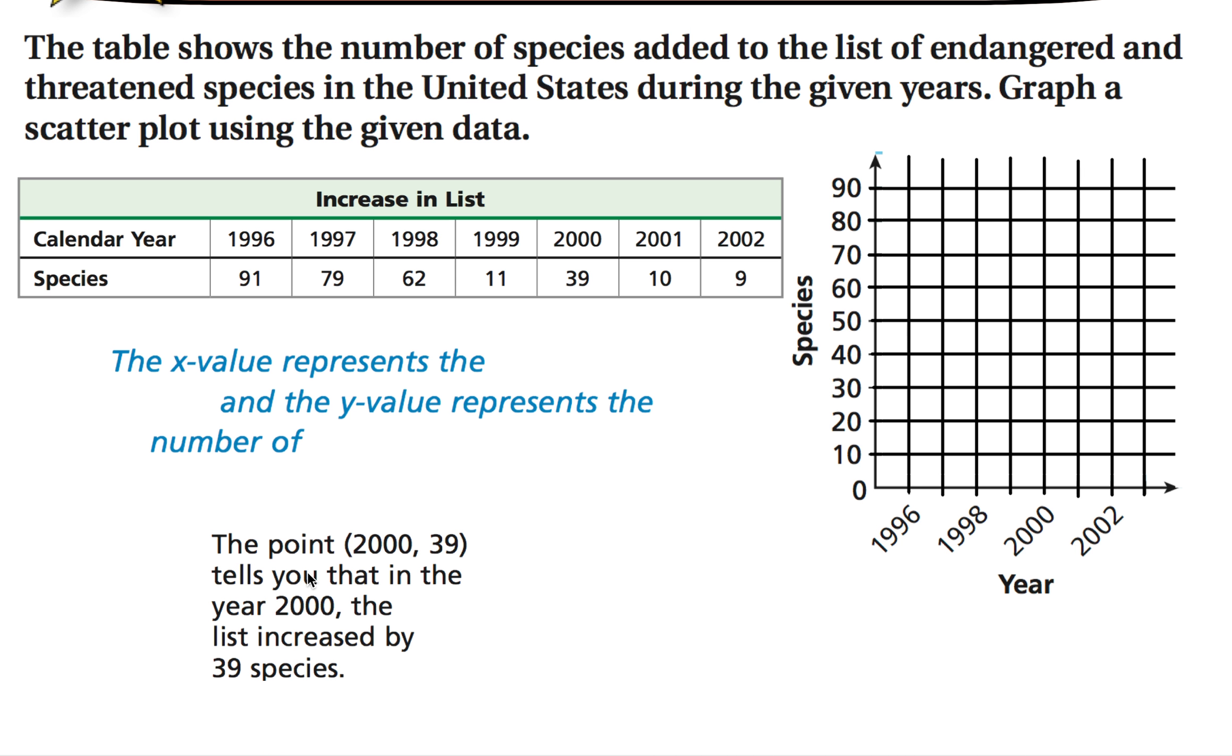In this first problem it says the table shows the number of species added to the list of endangered and threatened species in the United States during the given years. Graph a scatter plot using the given data.